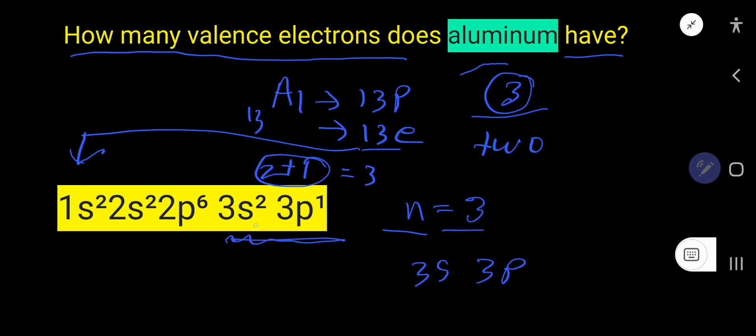is the third shell, and in the third shell we are getting three electrons: 2 plus 1. That is why aluminum has three valence electrons. I hope you have understood.